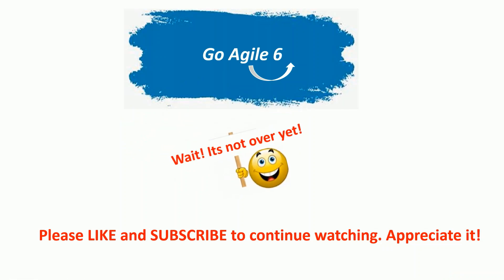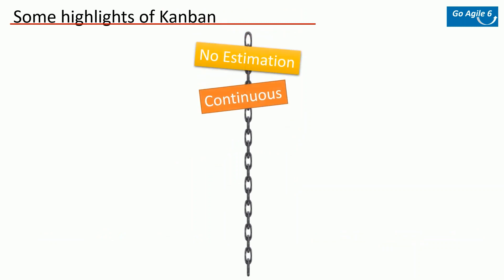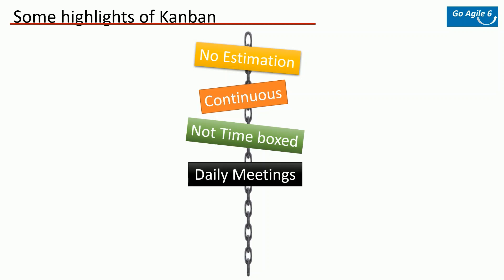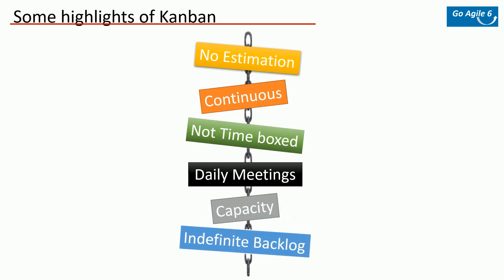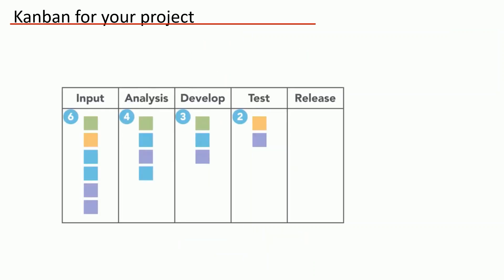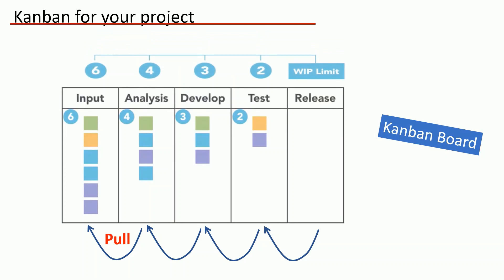Typically in Kanban there's no estimation — it is continuous or ongoing tasks with no time-boxed iterations. Daily meetings focus mainly on impediments, and the focus is on delivery based on capacity rather than overloading developers. All issues, tickets, or tasks go into an indefinite pipeline called a backlog — a single indefinite backlog — and developers pull tickets from the backlog and process them. The backlog can always be prioritized or reprioritized. On the board, in each area such as input, analysis, development, etc., you pull only the limited number of tickets from the previous bucket based on team capacity. The numbers shown on top — six, four, three, two — represent your team capacity in each bucket, so you pull only that many items. It is clearly a pull system.